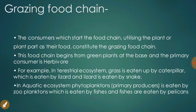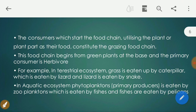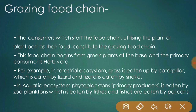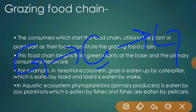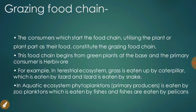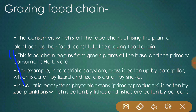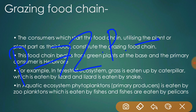For example, in a terrestrial ecosystem: grass is eaten by caterpillar, which is eaten by lizard, which is eaten by snake. In an aquatic ecosystem: phytoplanktons (primary producers) are eaten by zooplanktons, which are eaten by fishes, which are then eaten by pelicans or large fishes.